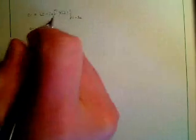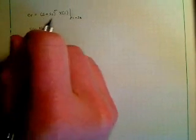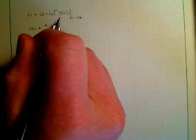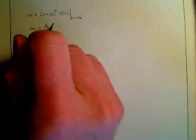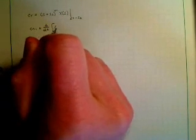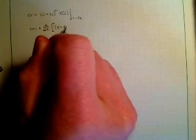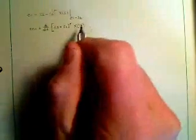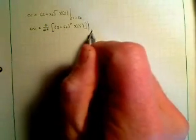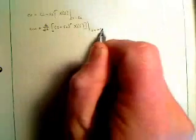So C to the R minus 1 is the derivative. Figure this out. You take the first derivative with respect to S of this. S plus S sub 3 to the R. Evaluated at S equals minus S sub 3.